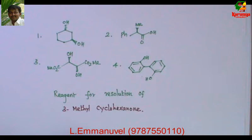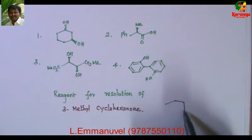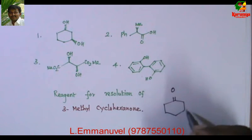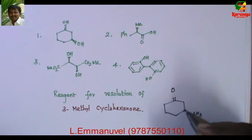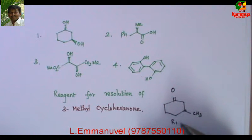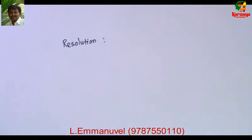Today I am going to solve a problem on resolution of ketone. Among these four reagents, which one can be used for the resolution of 3-methylcyclohexanone? This is the structure of 3-methylcyclohexanone — it is a racemic mixture containing both R and S in a 50:50 ratio. Resolution is the separation of R and S from a racemic mixture.